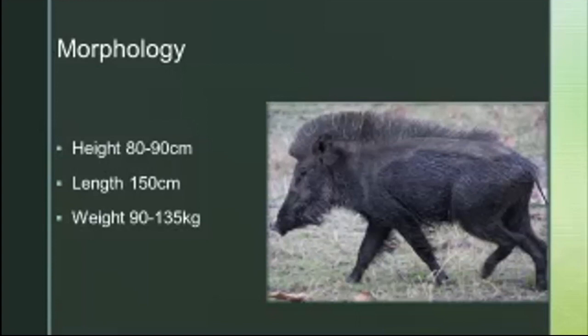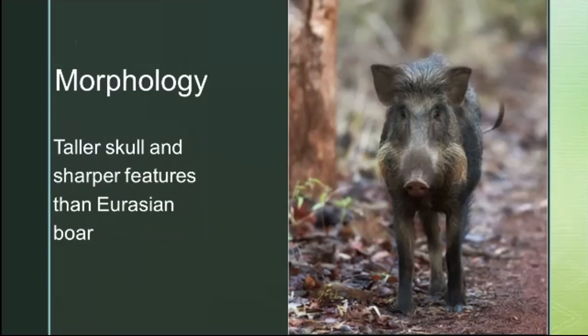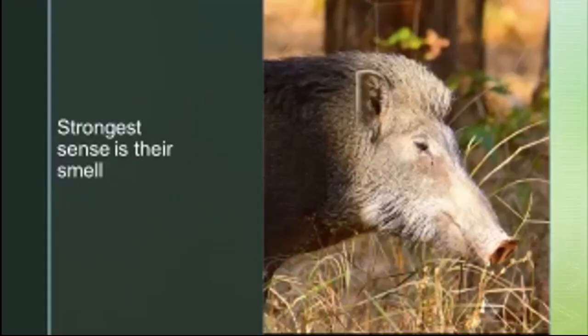Their weight varies from 90 to 135 kilos, with the males being much bigger than the females — those top weights would be the males. Another difference from other Eurasian boar species is their skull shape: they've got a taller skull with sharper features, sharply pointed ears that are quite a bit smaller, and proportionally smaller teeth and shorter nasal bones than other subspecies. As with the rest of the swine family, their most acute sense is smell; their hearing and vision aren't quite as strong.